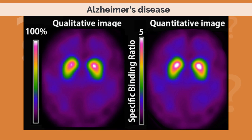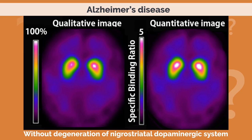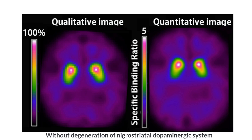Next, images are shown for movement disorders in which degeneration of the nigrostriatal dopaminergic system is absent. Alzheimer's disease does not present with motor deficits in early stages, but as the disease progresses, parkinsonian symptoms may appear and must be differentiated from dementia with Lewy bodies. DAT scan is normal in Alzheimer's disease. Essential tremor is a neurological disorder causing involuntary rhythmic shaking, and DAT scan is normal, helping to distinguish it from Parkinson's disease.